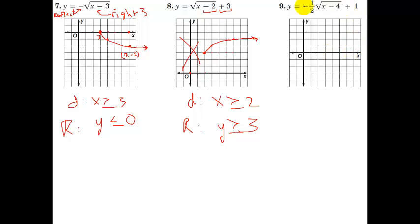I'm not going to graph this one, but let's see what happens. This right here means it's gone right 4. This means up 1. So over 4, up 1. The starting point is here. And then, because of the negative sign, it's actually going to come downward like this. And because of the 1 half, it's only going to be 1 half as tall as normal.